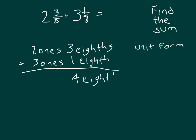And then we also have ones. We have five ones in all. So in unit form, it's five ones along with four eighths. And we write that as a mixed number.